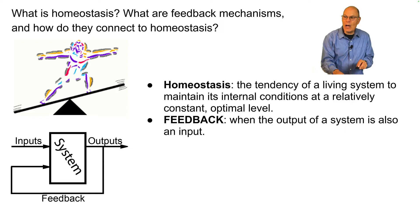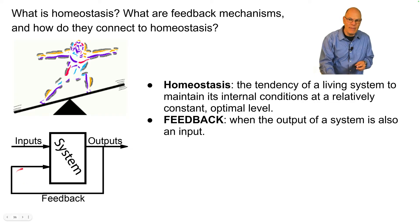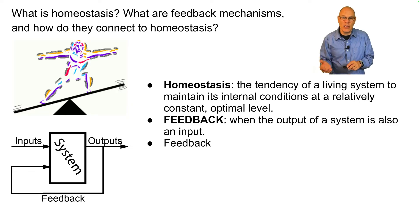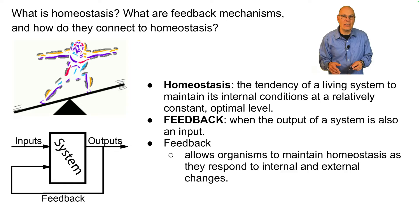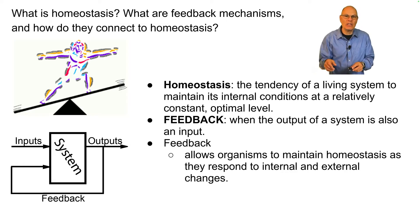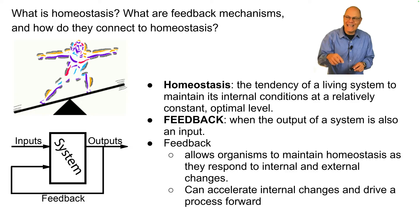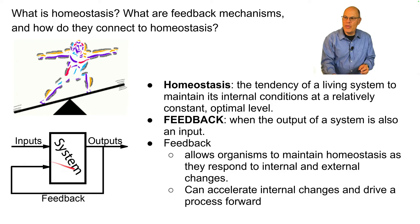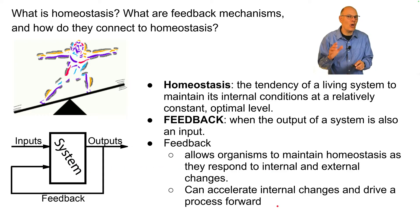Feedback is when the output of a system is also an input. Here we have some system, and feedback is when the output feeds back into the system. Feedback can do two things: it can allow organisms to maintain homeostasis as they respond to internal and external changes — as with temperature — or it can accelerate internal changes and drive a process towards a conclusion. The first is connected with negative feedback, and the second with positive feedback.